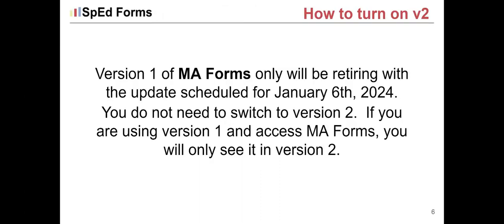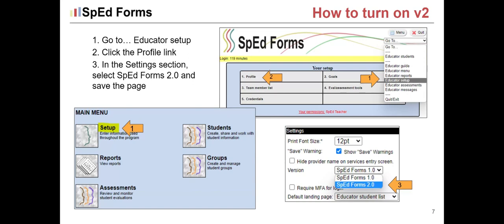We're going to switch to version 2 if you haven't already. The update scheduled for January 6th will be retiring version 1 of MA Forms. This doesn't mean you are required to switch if you are using version 1 — it just means when you go to MA Forms, you will only see those in version 2. If you're in version 1 and want to turn on version 2 now, go to your educator setup — the button in the upper left-hand corner on the main menu, or use the go-to menu in the upper right-hand corner. Then select profile, and in the lower left-hand corner of your profile there will be a settings section where you can select SPED Forms 2.0.